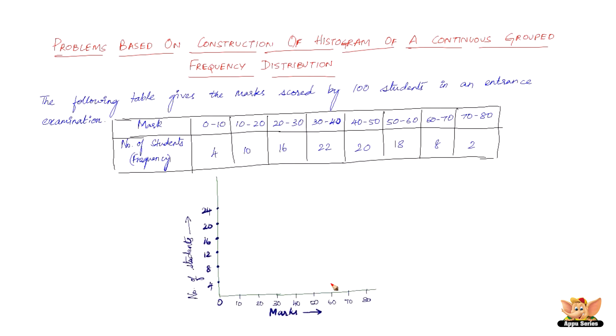So here we have done the first four steps. That is, take a graph paper and draw two perpendicular lines. So I have drawn two perpendicular lines here. One is the Y-axis and one is the X-axis. Taking the horizontal line OX as X-axis and vertical line OY as Y-axis. And then choose the suitable scale along X-axis and represent the class limit. So that is what I have done.